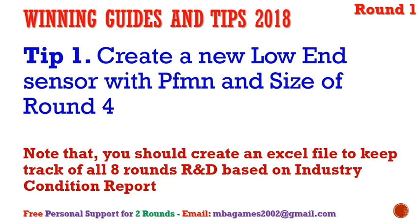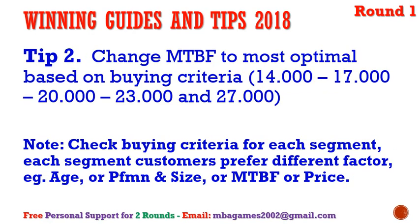Tip number one continued: create the new low-end sensor. You can delay adding new products until round two, because if you add a new product right from round one, higher costs and lower sales mean you won't get good net profit in round one. So consider adding a new product starting from round one or round two.